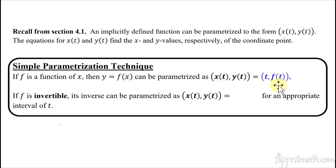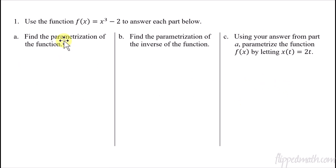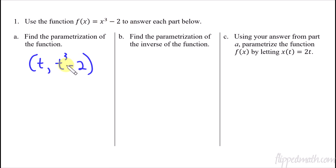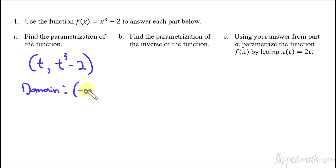Let's do an example. Looking at the very first example in your notes, we have a function f of x. To find the parametrization, it's really simple: the x value is going to be t, and the y value is going to be t cubed minus 2. So instead of an x, we just put a t. This is the simplest and easiest way to parametrize this function. The domain here is all real numbers — from negative infinity to positive infinity — because t goes all the way in both directions to create this graph.